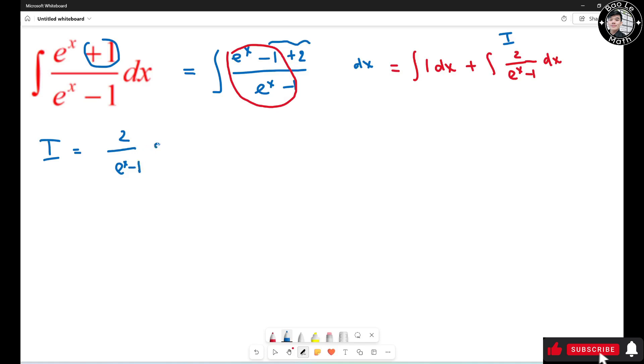In order to calculate this one, multiply the top and bottom by e to the negative x. So I have e to the negative x on top and e to the negative x on the bottom.